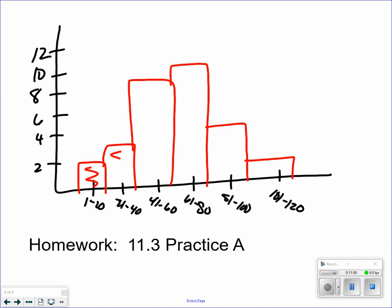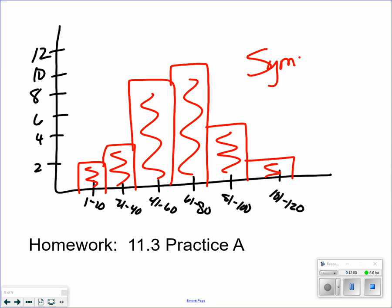How would you describe this data? It's kind of the same on both sides and really high in the middle. So I would consider this to be symmetric. It doesn't have to be perfect, it just needs to be close. If I touch the tops of this, it would really kind of be symmetrical from one side to the other.